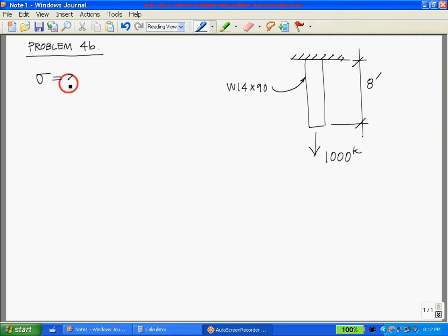So let's determine the stress first. We know the equation for stress equals force per area, and we can open up our steel manual and determine that the area of a W14 by 90 is equal to 26.5 inches squared.